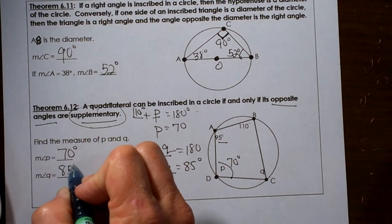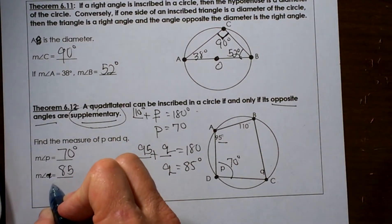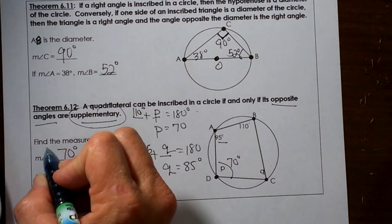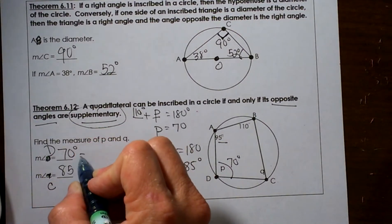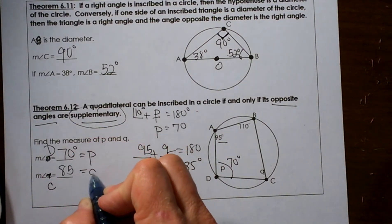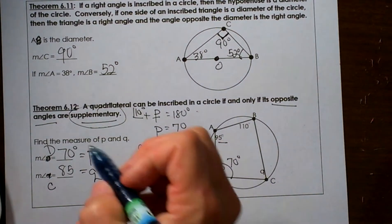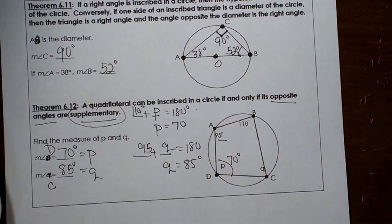So the measure of, actually that should be the measure of angle C and the measure of angle D, but this is also equal to the variable P and the variable Q. Anyway, just some notation things. And there you go. So that's how you define this through angles.